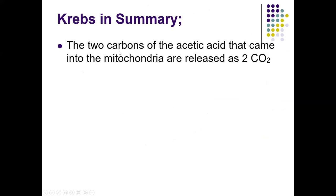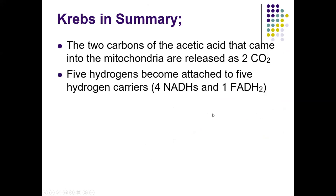To summarize the Krebs cycle: the two carbons of acetic acid entering the mitochondria are released as CO2. Five to six hydrogens become attached to hydrogen carriers. One ATP is generated per turn — remember, this is a bonus, not the main function.